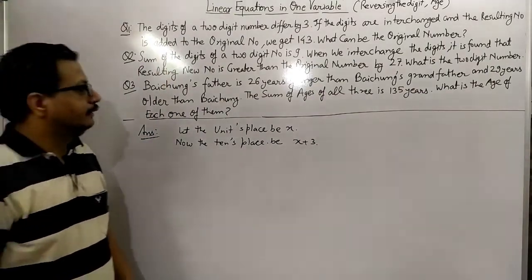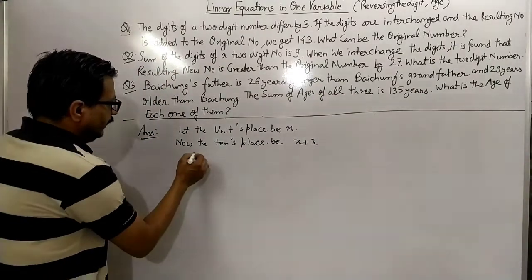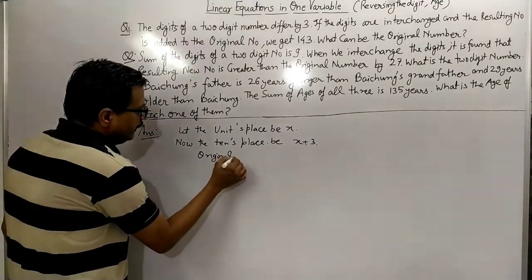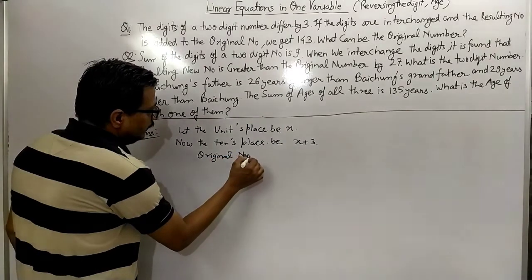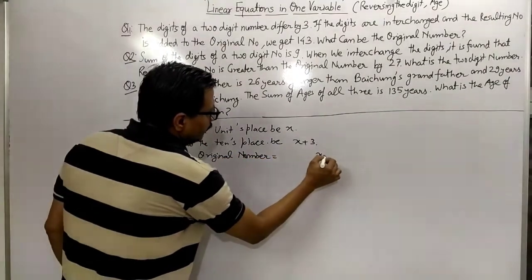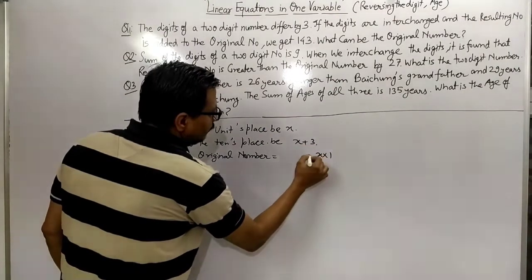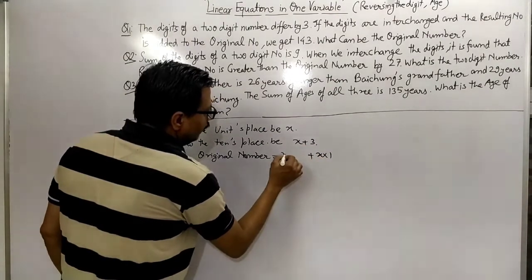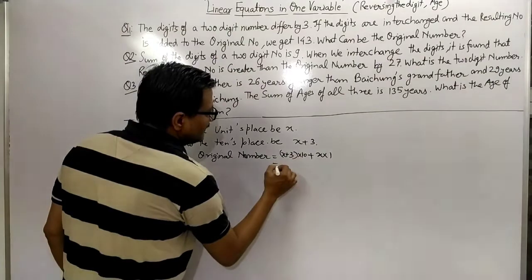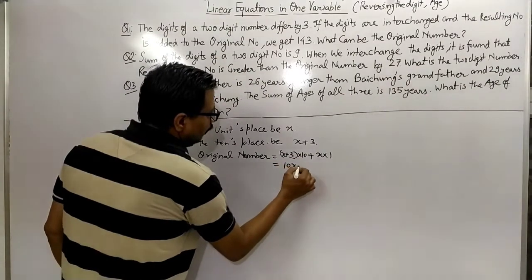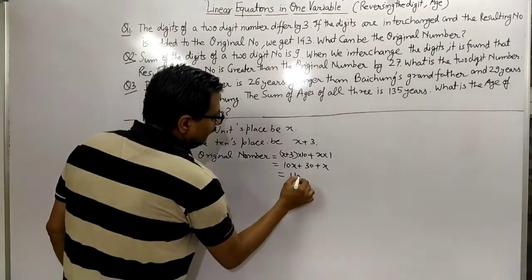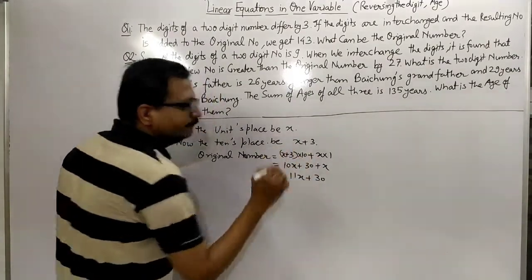Now, as I explained earlier, let's form the original number. The digit at the units place is multiplied by 1, and the digit at the tens place is multiplied by 10. Taking tens digit as x + 3, the original number becomes: x×1 + (x+3)×10 = x + 10x + 30 = 11x + 30.